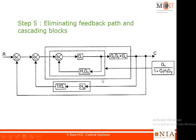As I said, after interchanging the two summing points you can see that the inner loop has come within the bigger loop. The two summing points can be interchanged without any compensation. Now this small inner feedback loop can be reduced to a single block. After reducing it you can multiply it with the next block, and then you have a feedback loop with h2 and another feedback with unity.